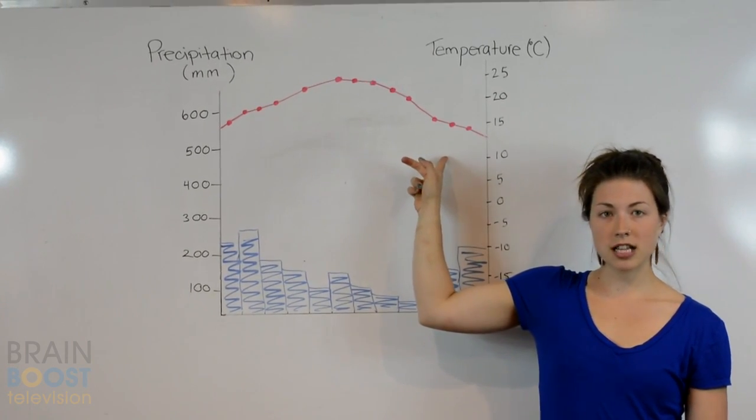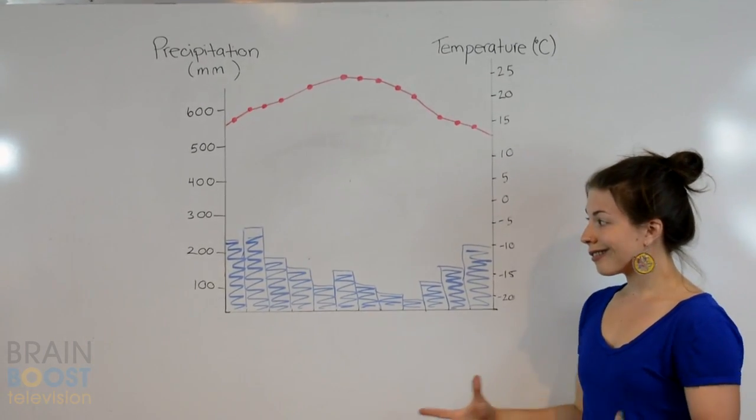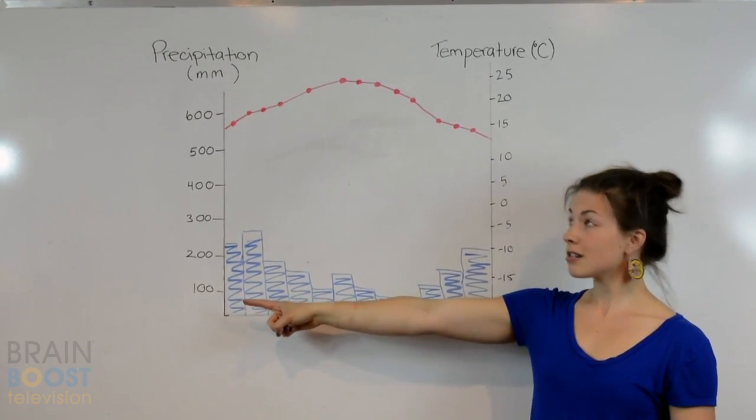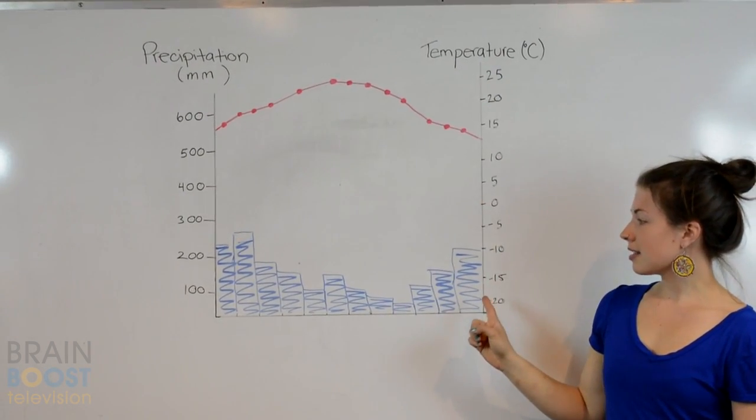These guys here are temperature. To figure out what the right numbers are, just make sure you go to the right axis. Precipitation in millimeters. Temperature in degrees Celsius.